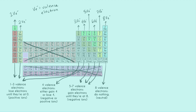To summarize: one to three valence electrons means losing electrons, resulting in a positive ion. Four valence electrons means becoming negative or positive depending on whether it loses or gains. Five to seven valence electrons means gaining electrons, resulting in a negative ion. Eight valence electrons means no change — they remain neutral with a charge of zero. Now let's do a couple more practice problems.